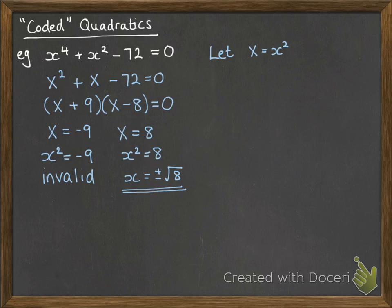And then we follow on with the other solution, so x squared equals 8. So x is plus or minus the square root of 8, and that is our solution.